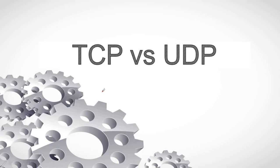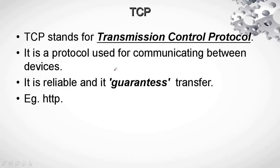Hello everyone and welcome back to Hackshort. In this video we will be taking a short look at TCP and UDP. These are the two types of transmission protocols, basically used by devices to communicate with each other. So let's start off the discussion with TCP.